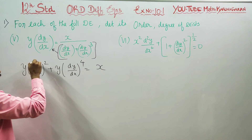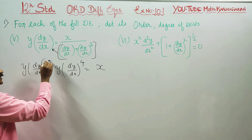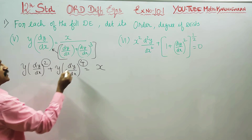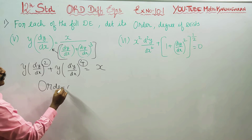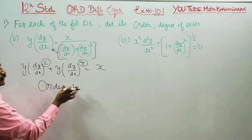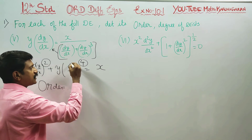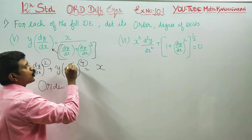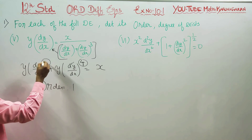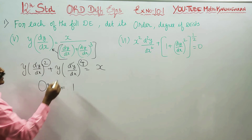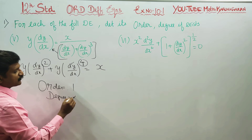This is the order. Order 1, degree is 4. The highest power is 4. Order is 1 and degree is 4.